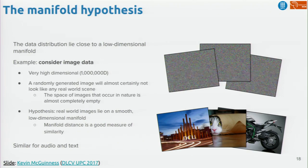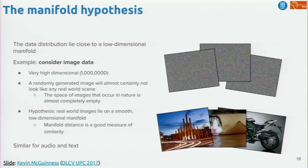Consider that an image is a 2D signal and each pixel is a dimension in a high-dimensional space. Imagine a 10x10 grayscale image — that image is a point in a 100-dimensional space. Whatever image you have, projected into this 100-dimensional space, will be somewhere in that high-dimensional space.